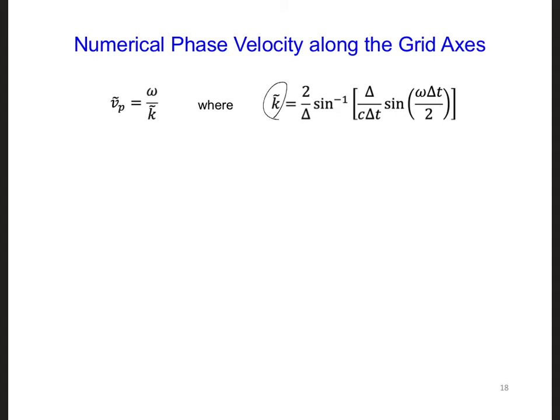In the expression for the numerical wave number, delta is 15 meters. dt, which you could get from your FDTD simulation, is about 35 nanoseconds.